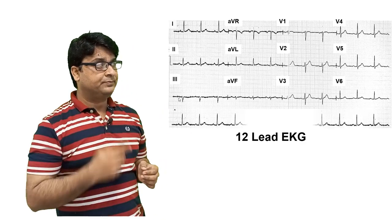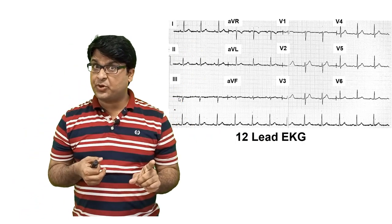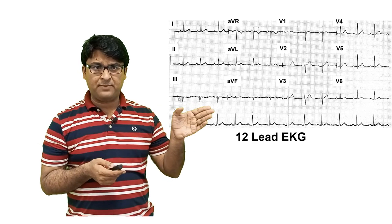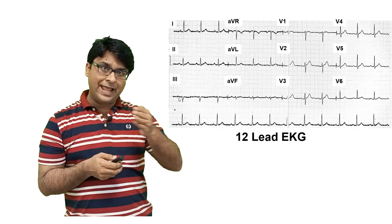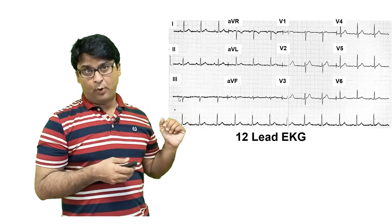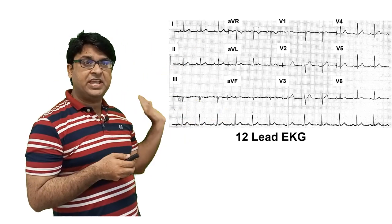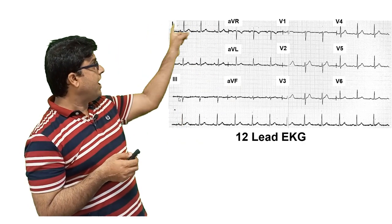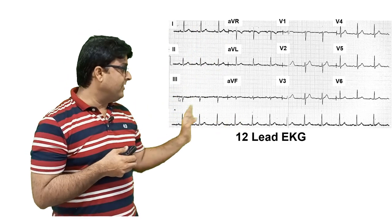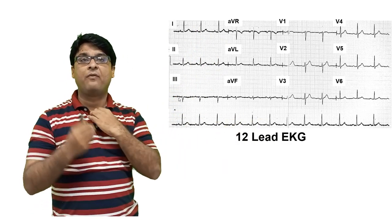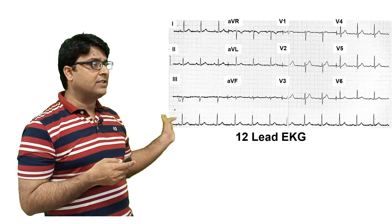On an EKG strip, usually at the bottom there is a rhythm strip, which is run for a 10-second time period and is usually one lead — either lead 1 or lead 2. So a complete EKG paper has short time-duration runs of leads 1, 2, 3, AVR, AVL, AVF, and V1 to V6, plus a long 10-second strip of one limb lead, typically lead 2 or lead 1.